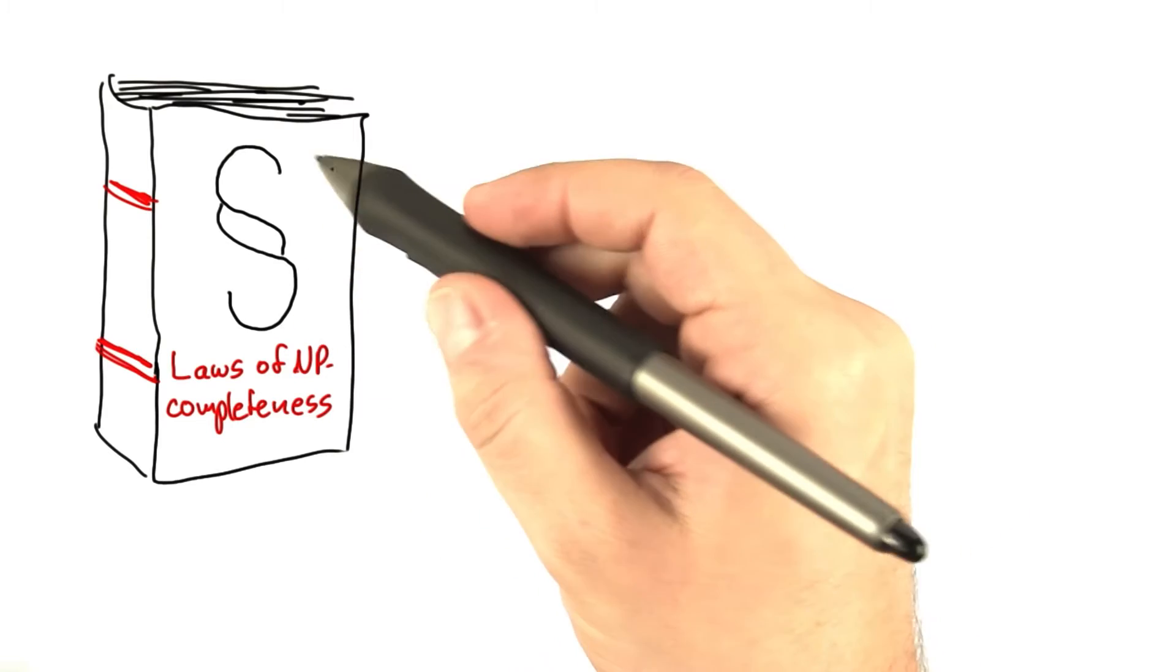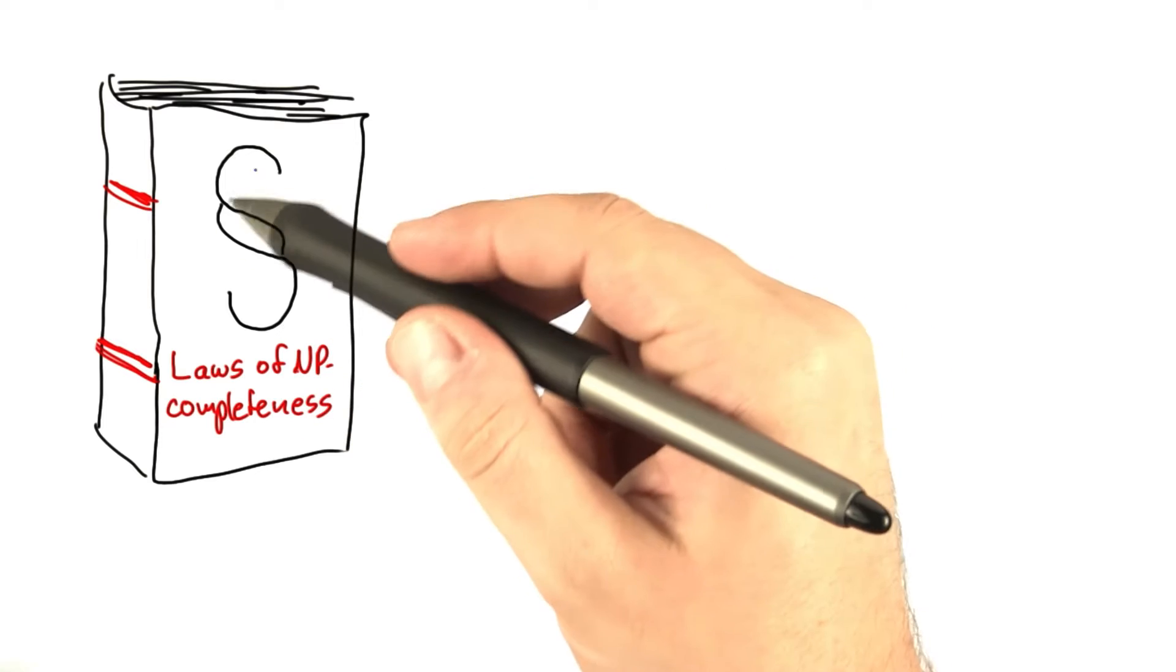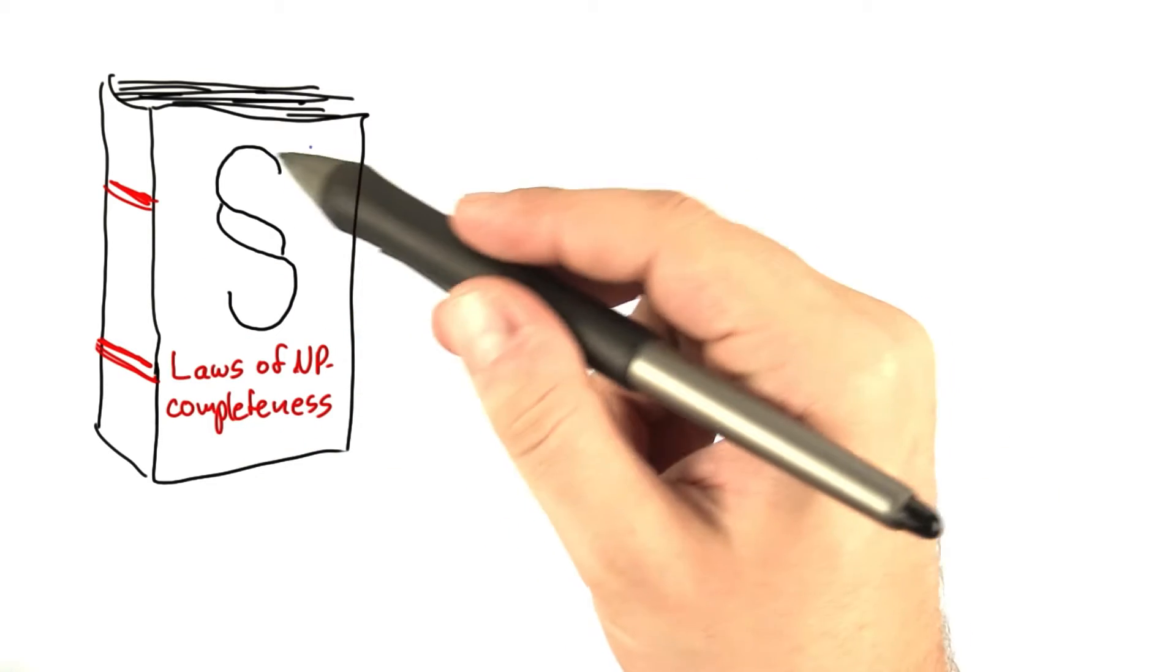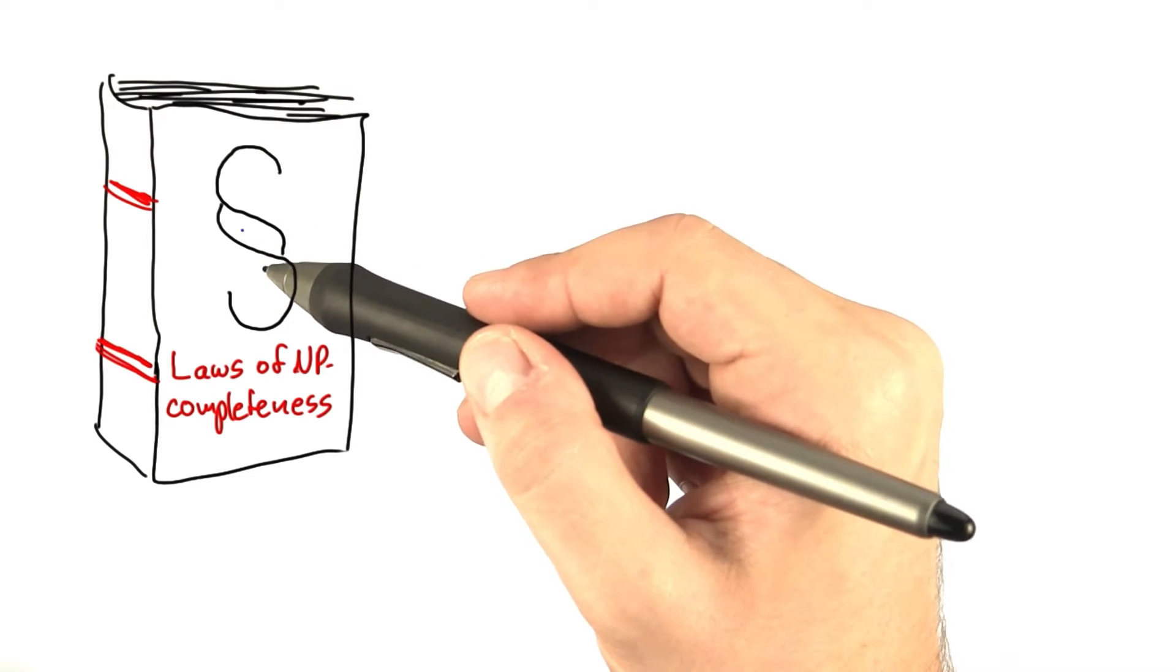So now that you've learned about search trees and preprocessing, you already know quite a lot about the loopholes that we can find in the laws of NP-completeness in order to actually tackle an NP-complete problem.